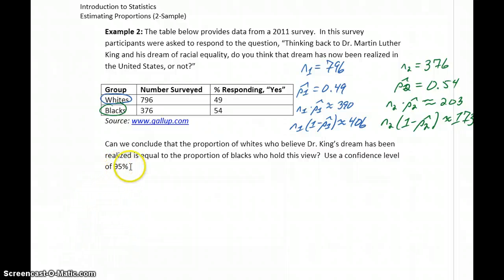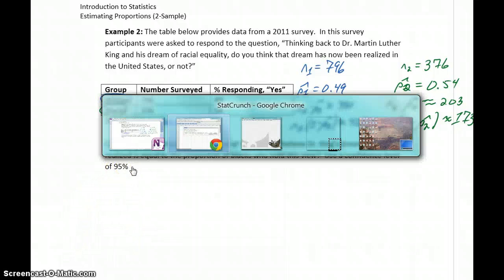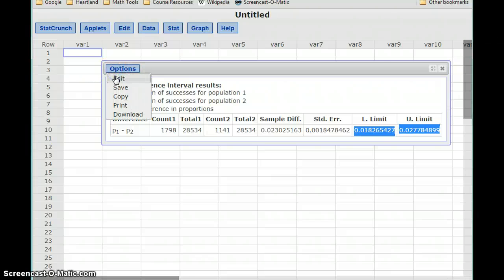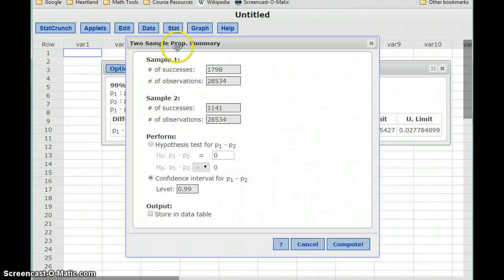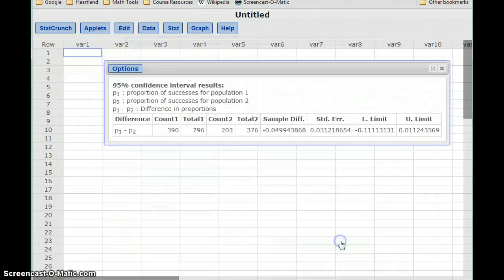In this case, we want to construct a 95% confidence interval. We can go back to the edit screen for this two-sample proportion summary and update it with our new values. Our first number of successes is 390 with a sample size of 796. For the second group, we had 203 successes out of 376 people. Change our confidence interval to 0.95 and click Compute.